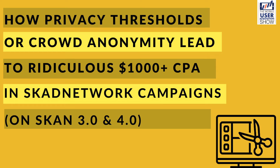According to a study done by AppsFlyer across their portfolio of apps, if you have less than 10 installs per day per campaign, then close to 90% of your conversion values get obfuscated, which is why the CPAs can be really scary. Also note that the privacy threshold determination happens at the time of install, not at the time of a post-install event such as a purchase or registration. The privacy threshold is determined by the number of installs, not by the number of post-install events — it doesn't matter how many purchases or registrations you get.